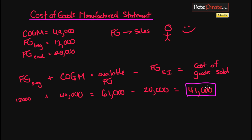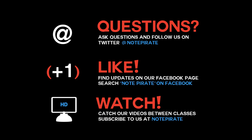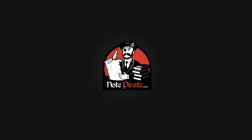That's all I wanted to cover: cost of goods manufactured and cost of goods sold. Next time we'll be talking about journal entries and how to debit and credit the transitions from direct materials to work in process, work in process to finished goods, and so on. Make sure to subscribe, and if you have questions you can tweet us at Note Pirate or like us on Facebook. Thanks for watching!